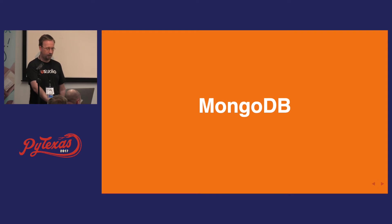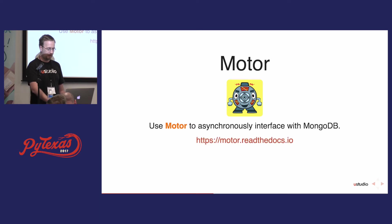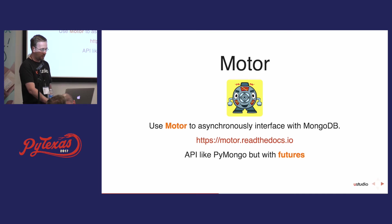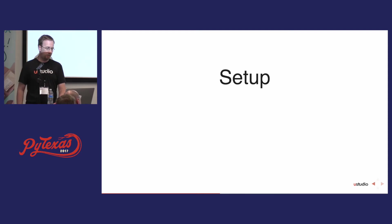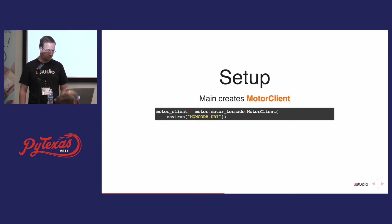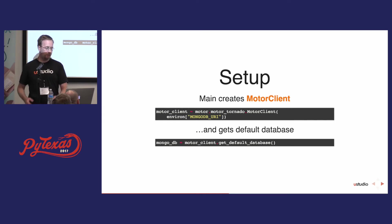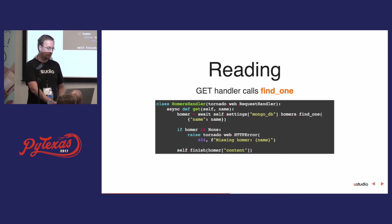Let's look at Mongo. Normally you might use PyMongo, but we're going to use Motor, which is an asynchronous interface to Mongo. The API is very similar to PyMongo — the difference is that most of the methods return futures. In main, we create the motor client instance, passing in the Mongo database URL, and then get the default database.